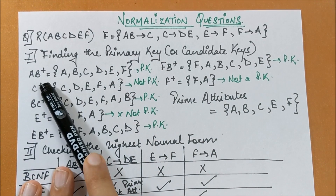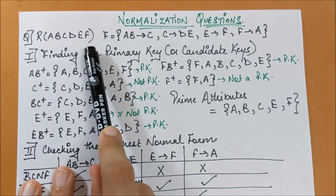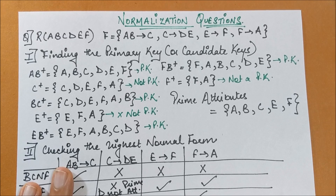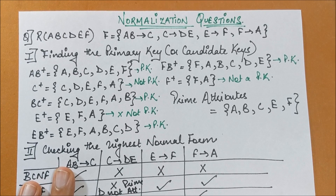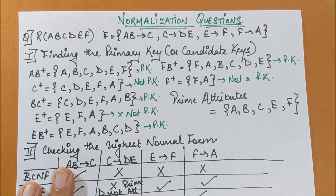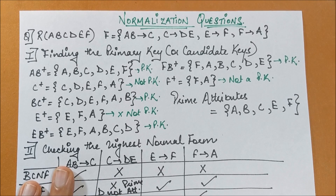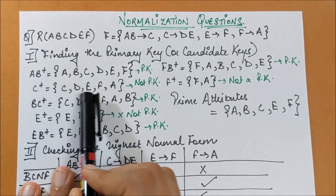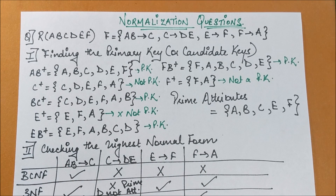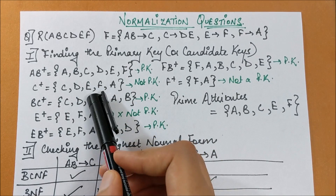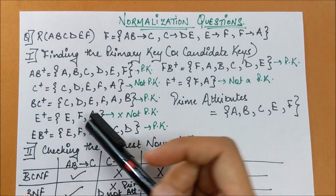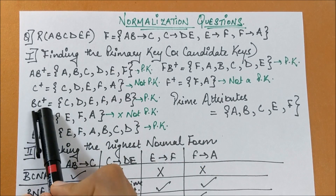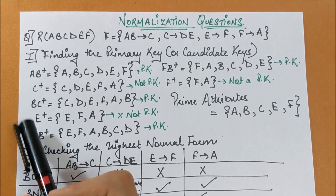The closure of AB gives me all the attributes of the relational schema, so AB is a primary key. I also find the closure of C — B is not present in that closure set, so C alone is not a primary key. However, if I add B, then BC becomes a candidate key. I've already made a separate video on finding closures, available in the same playlist.